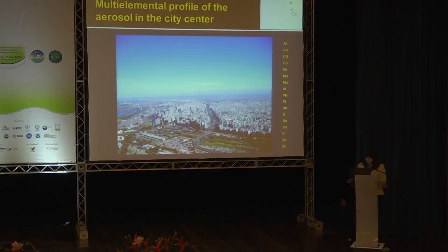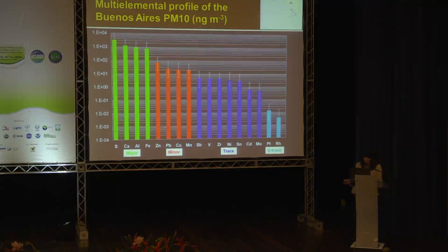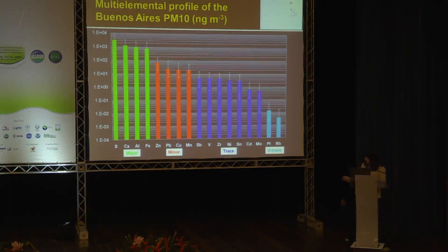This semi-log plot provides an overall view of the multi-elemental profile of the urban PM2.5 and PM10, divided into major, minor, trace and ultra-trace categories according to their concentration level. Concentration levels span seven orders of magnitude — from micrograms per cubic meter for sulfur and geological elements such as aluminum, calcium, and iron — down to picograms per cubic meter for platinum and rhodium.